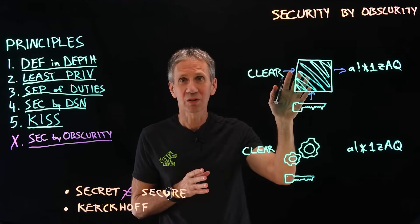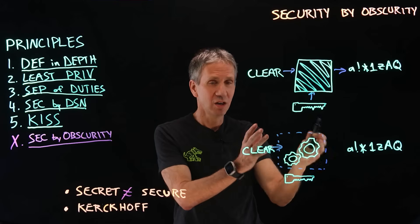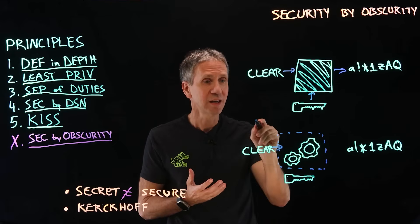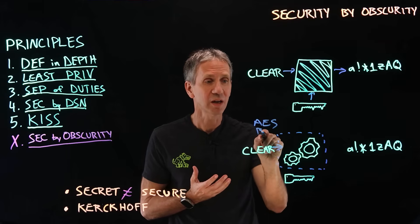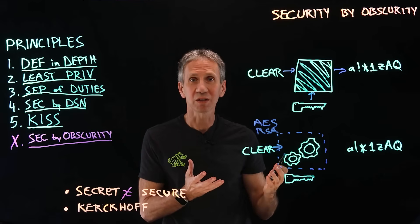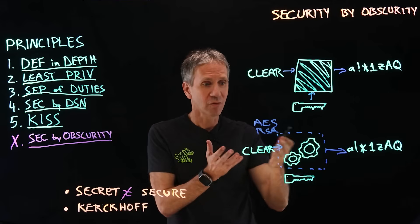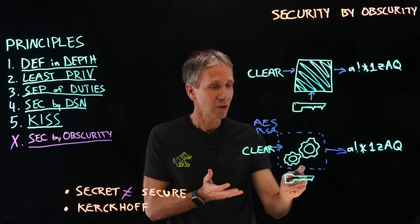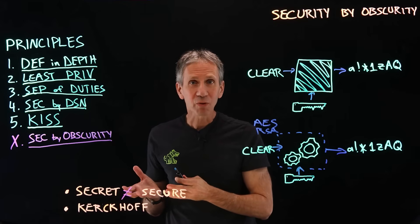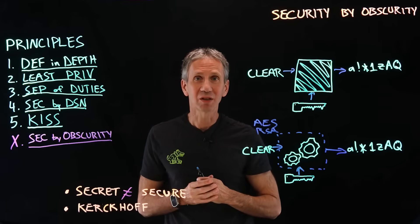What we want is not black box security — we want glass box security. The clear text goes into a crypto algorithm that we understand because it's been published. The good crypto algorithms we rely on today, like AES (the Advanced Encryption Standard) and RSA, are algorithms that anyone who wants to know how they work can look up and study. The security doesn't come from secret knowledge of how the algorithm works — it produces cipher text from clear text without keeping the algorithm secret. The only secret is the key. The same applies to secure operating systems and secure applications: as long as security is based on secrecy, it's not something we can rely on.